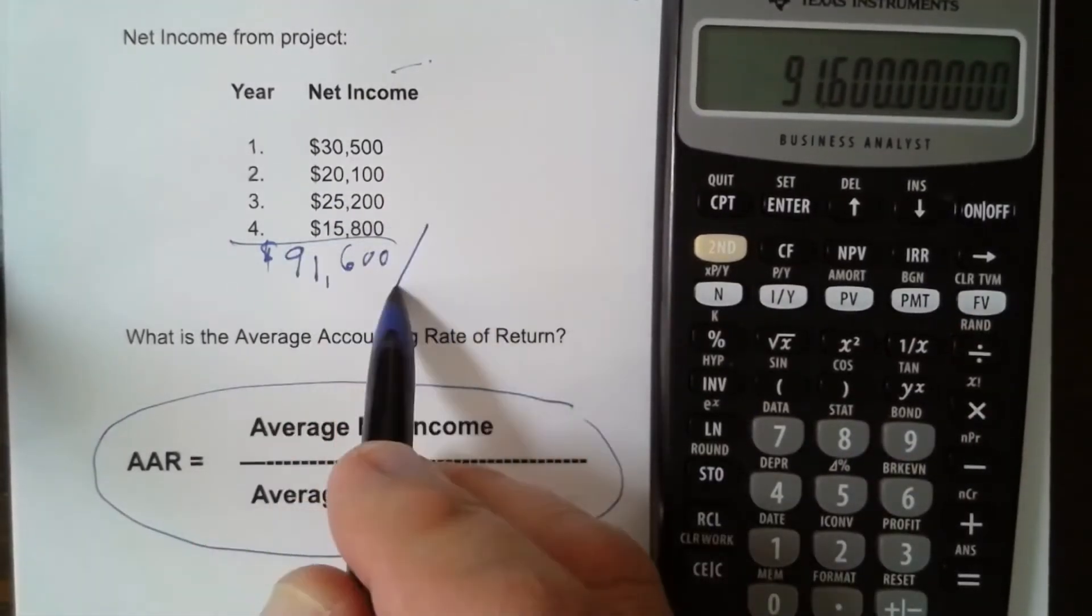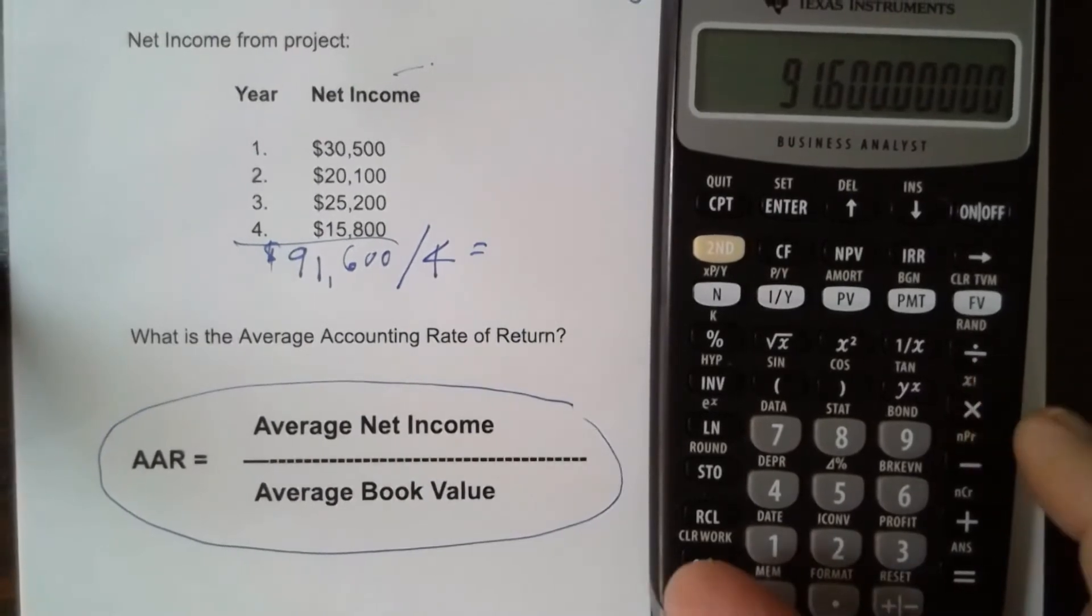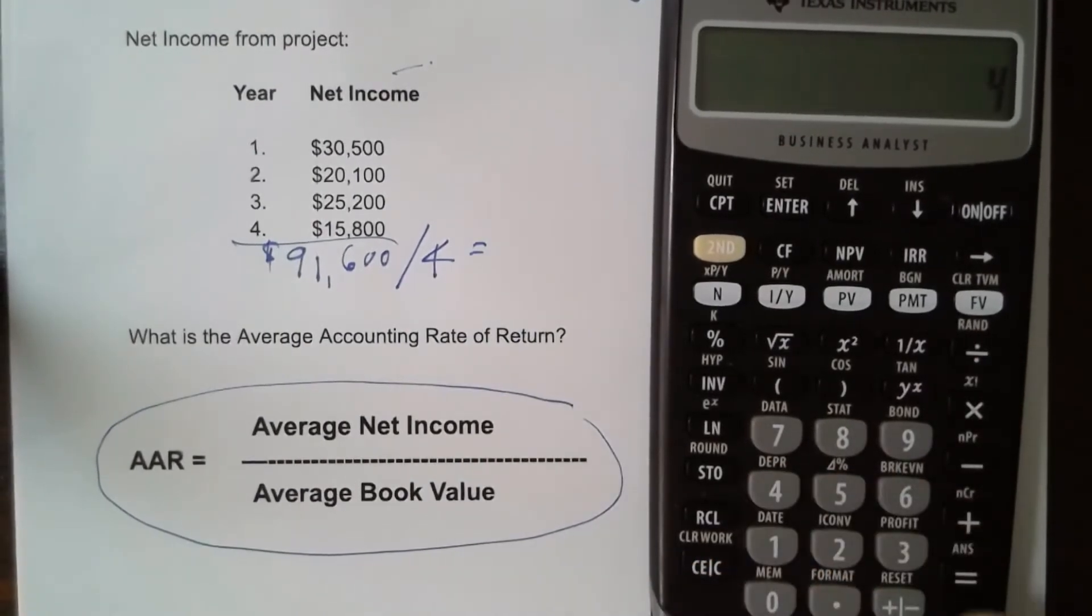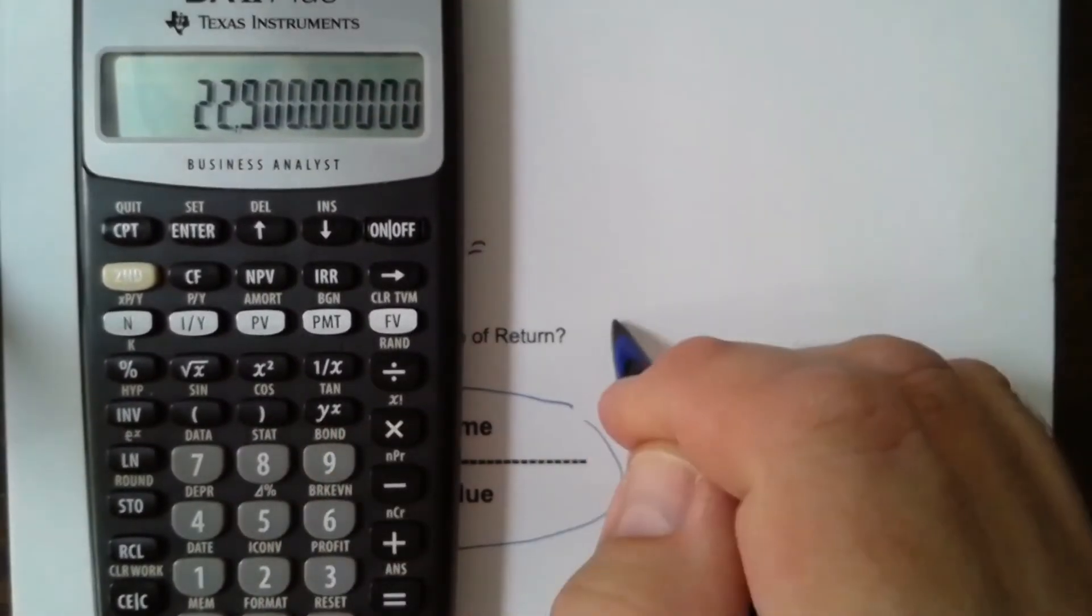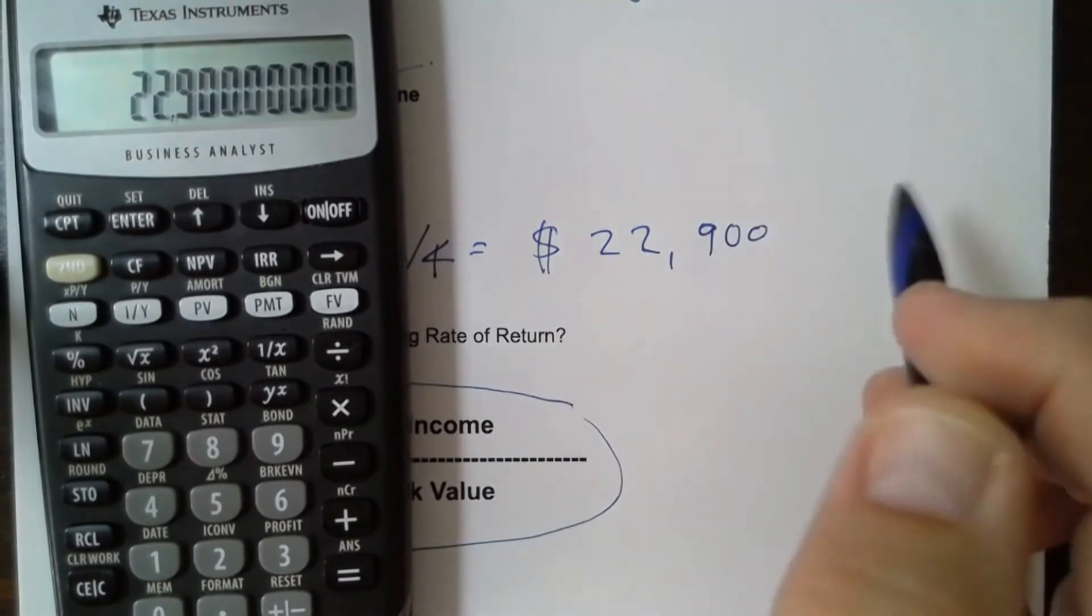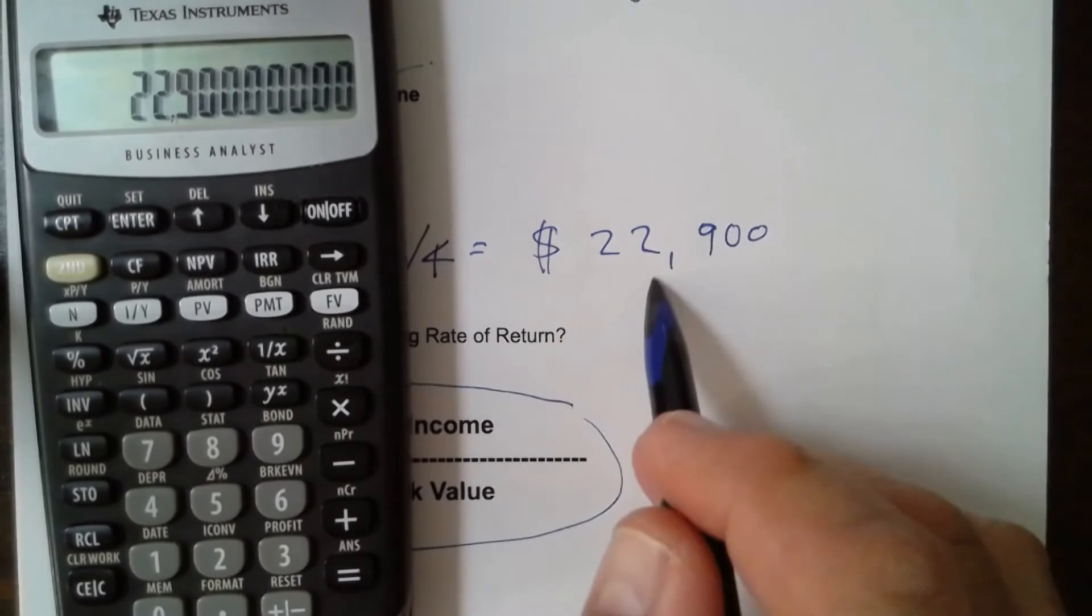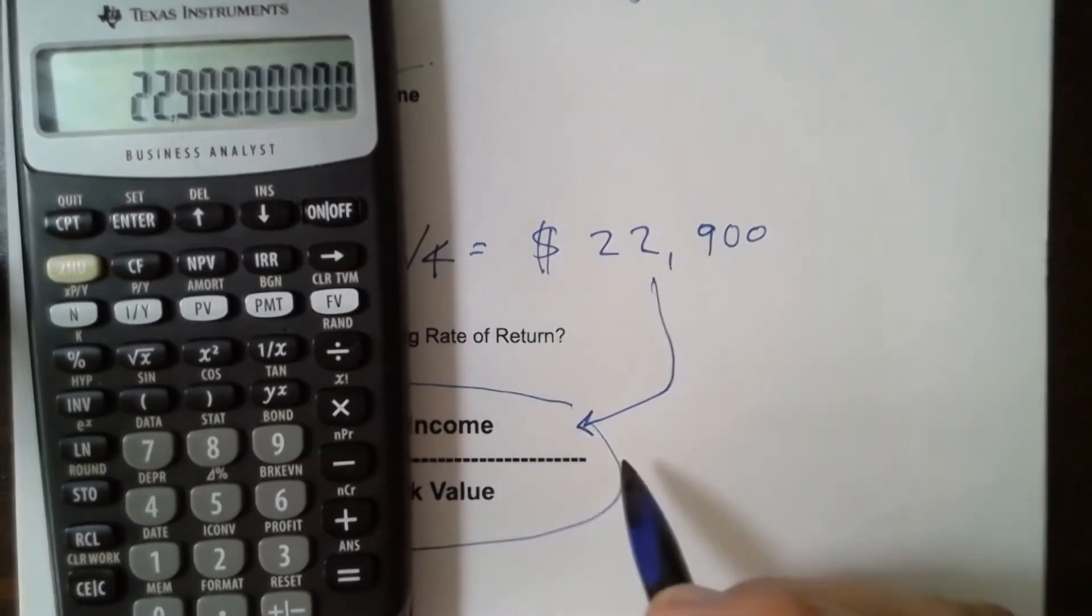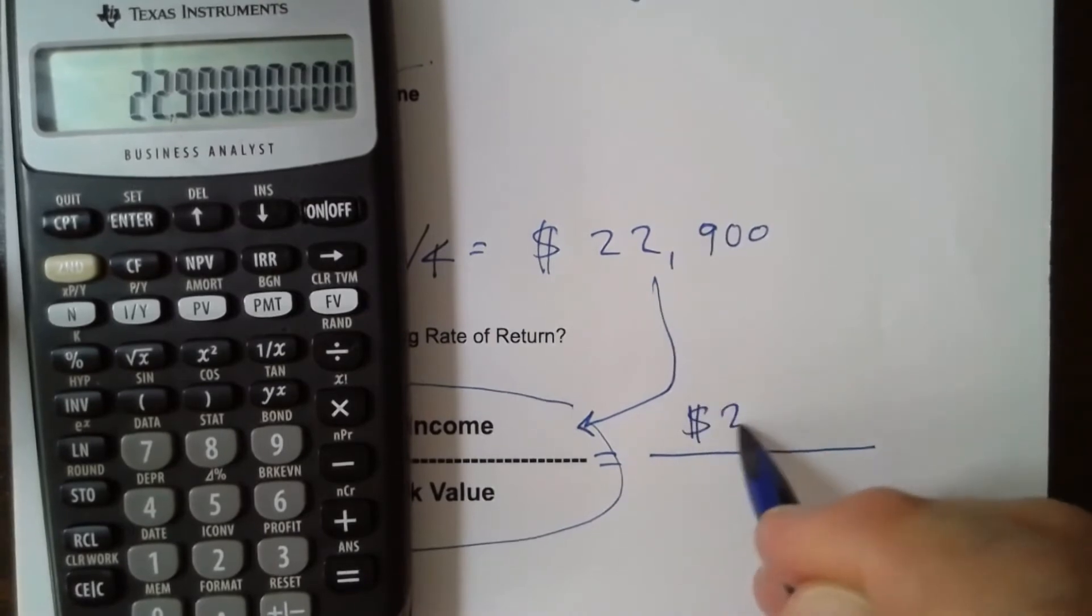To find the average, we've got to divide that by four because there's four years. So I divide by four. The number is already in the calculator so I just divide by four and that gives me $22,900. So $22,900 is our average net income which is the numerator for our formula. So I can start out by putting $22,900 for the numerator.